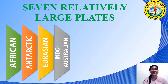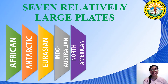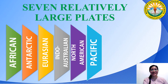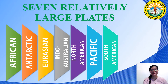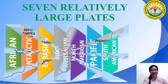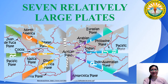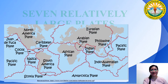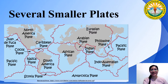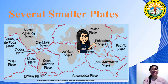There are seven relatively large plates: the African plate, Antarctic plate, Eurasian plate, Indo-Australian plate, North American plate, Pacific plate, and South American plate. There are also several smaller ones, including the Philippine plate.